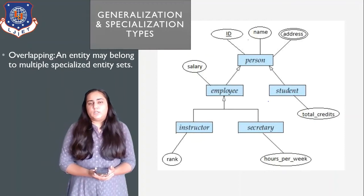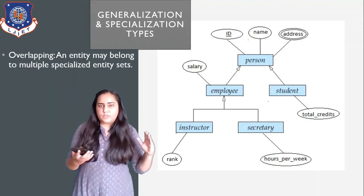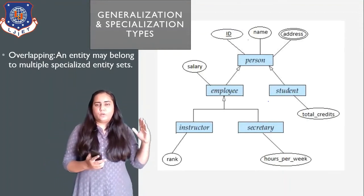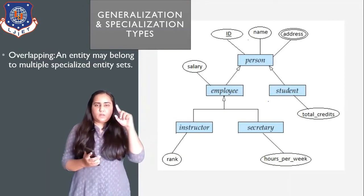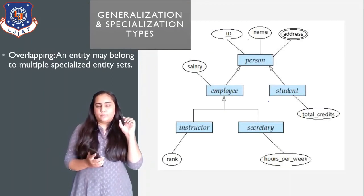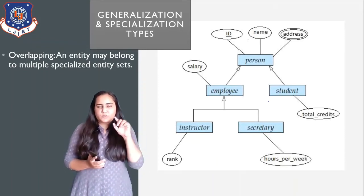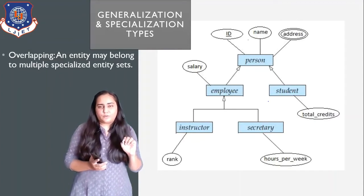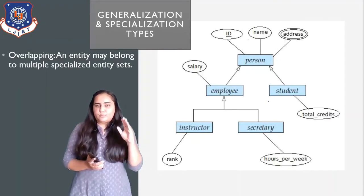To show that a specialization is overlapping in the diagram, we use two separate arrows. Both arrows are hollow arrows — we never color those arrows. They are two separate hollow arrows pointing from the higher-level entity down to the specialized entities.